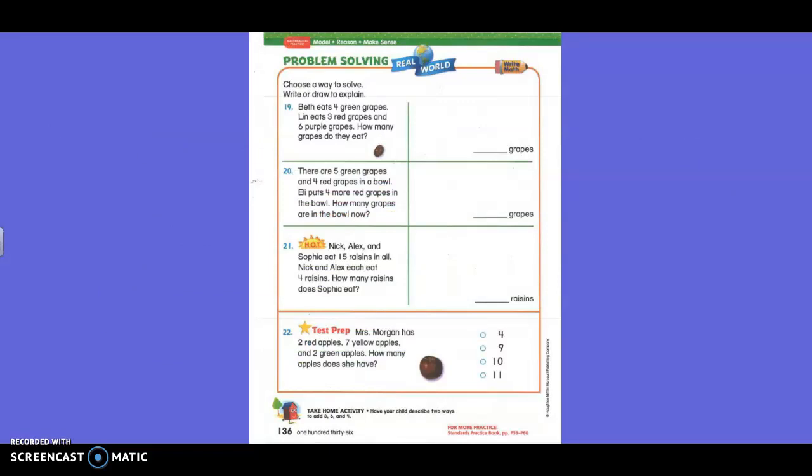All right. We're going to look at the hot problem on number 21. Let's read the story. Nick, Alex, and Sophia eat 15 raisins in all. Nick and Alex each eat four raisins. How many raisins does Sophia eat? Boys and girls. If it says they ate 15 raisins in all, in all means they added two times and answer. Fifteen is their answer. Is what they ate all together. Okay. They all ate 15. All together.